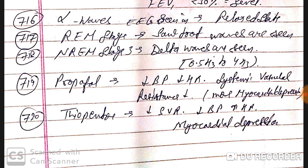Propofol causes decreased blood pressure, decreased systemic vascular resistance, and myocardial depression. Thiopentone also causes decreased systemic vascular resistance and decreased blood pressure, but with increased heart rate, and also causes myocardial depression.